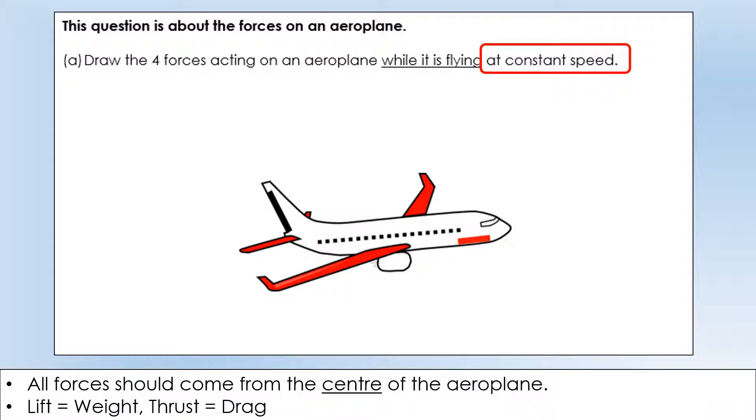So first of all, with a force diagram, one thing we're looking for is all forces should come from the centre, or in this case, of the aeroplane. And because it's at constant speed, we should have the lift force equaling the weight force, like you can see here. So you can see the arrows are the same length. And we should have the forward thrust force equal to the backwards drag force. And if we have that, that will mean it goes at constant speed.